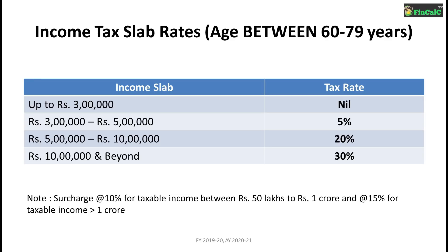Let us first see the income tax slab rates for people of age between 60 years to 79 years. There were no changes made in Budget 2019 as far as income tax slab rates are concerned. No income tax if your income is up to Rs 3 lakhs; 5% income tax if your income is between Rs 3 lakhs to 5 lakhs; 20% income tax if your income is between Rs 5 lakhs to 10 lakhs; 30% income tax if your income is above Rs 10 lakhs. Additionally, a surcharge of 10% will be applicable on taxable income if your income is between Rs 50 lakhs to 1 crore, and a surcharge of 15% will be applicable if your taxable income is above Rs 1 crore.